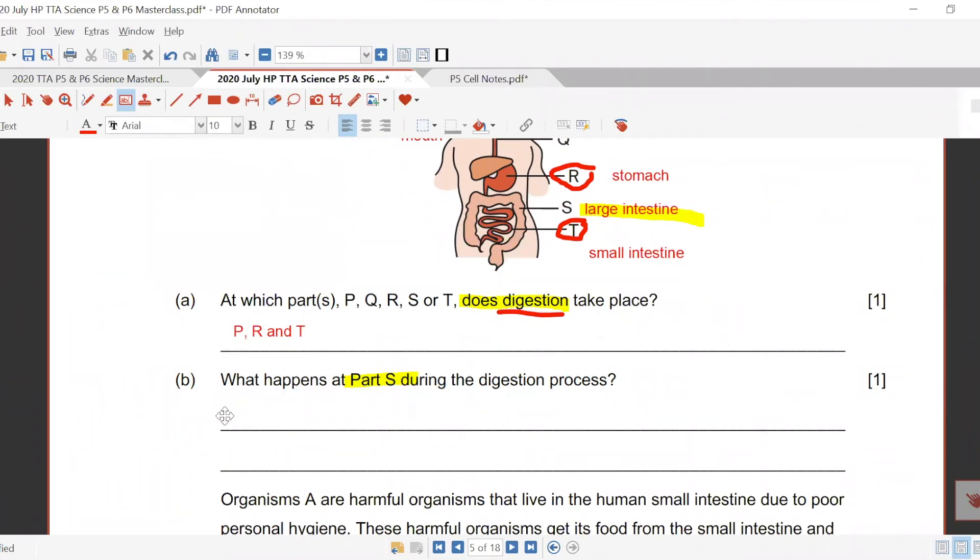You must tell me what's part S first. Remember I said you must have part and function. Part S is the large intestine. You want to tell me the part first. What is it? How should I tell you the function of it?